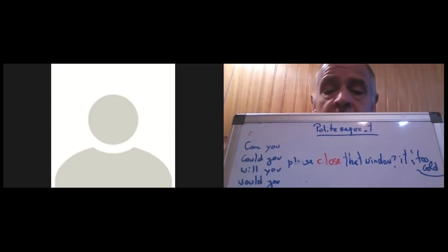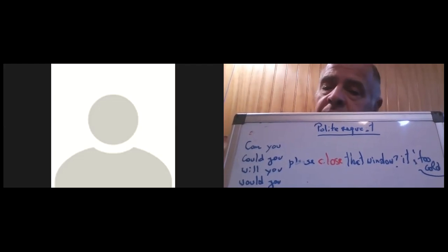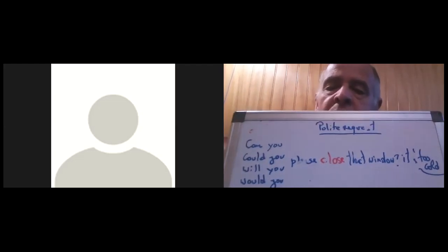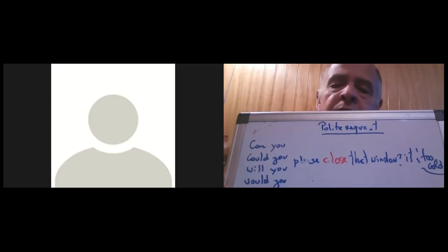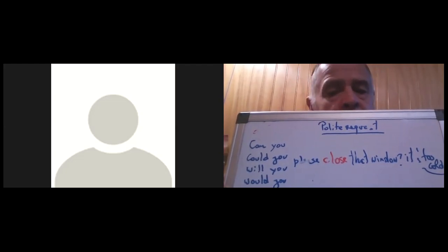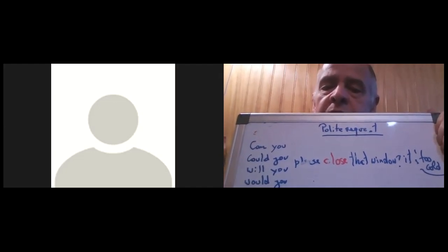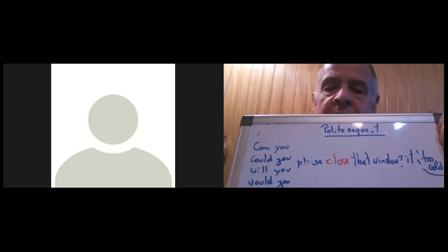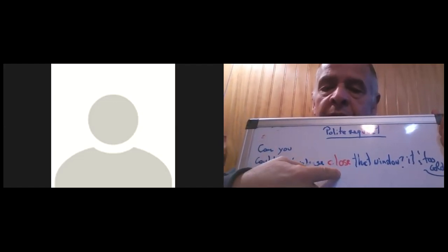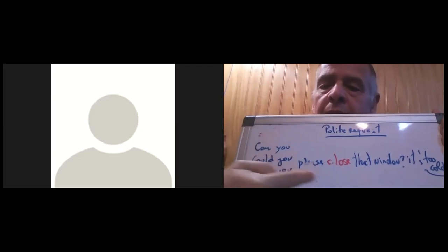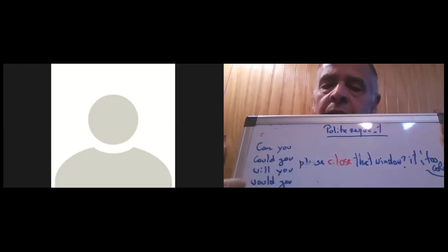We know that can, could, and would are normally used as questions. 'Will' for the present is a bit strange, but you can use it anyway — 'Will you please close the window?' You can also add or omit 'please' to make it more polite: 'Can you please,' 'Would you please,' 'Could you please,' 'Will you please close that window.' Whenever you use a modal verb, you must use the verb in the infinitive — that's very important.